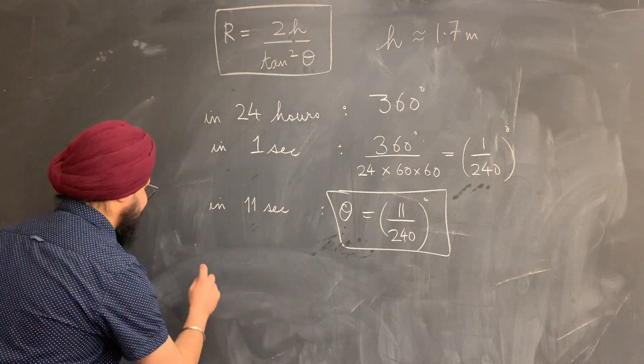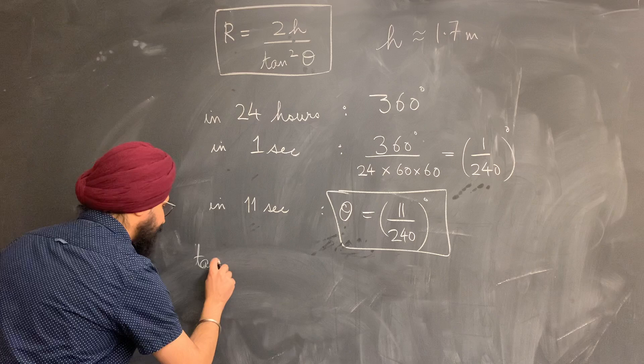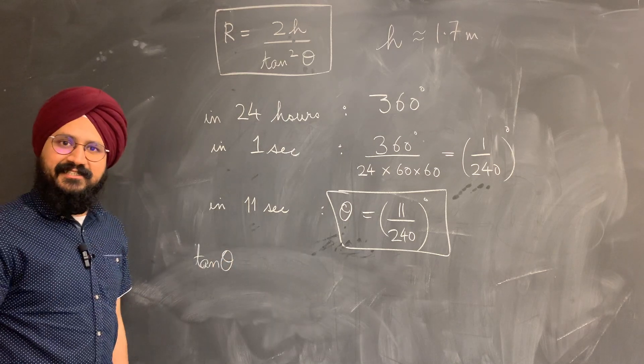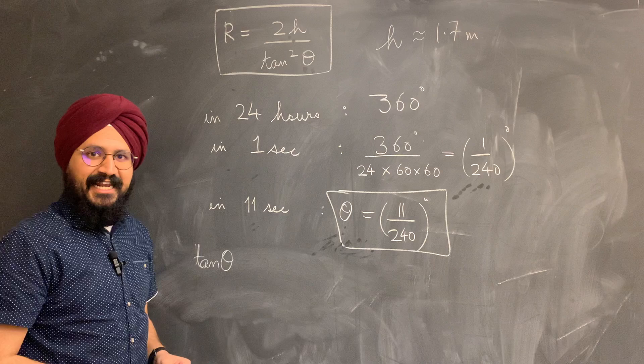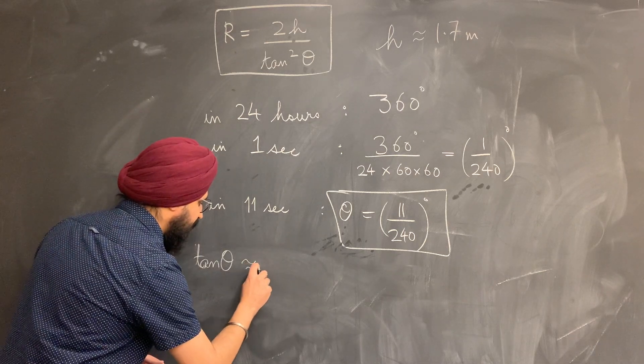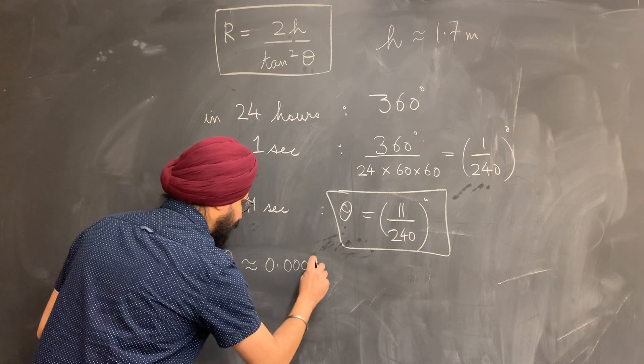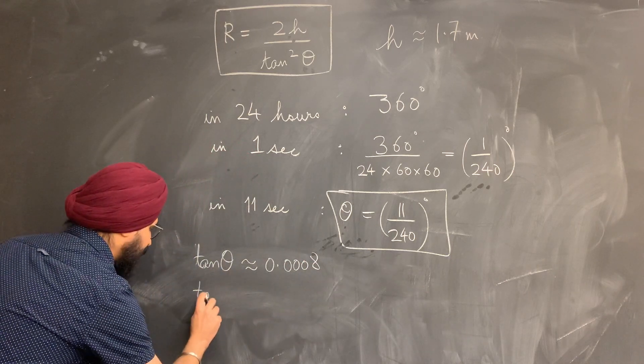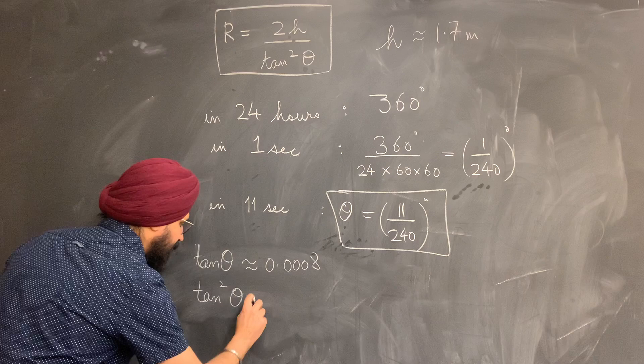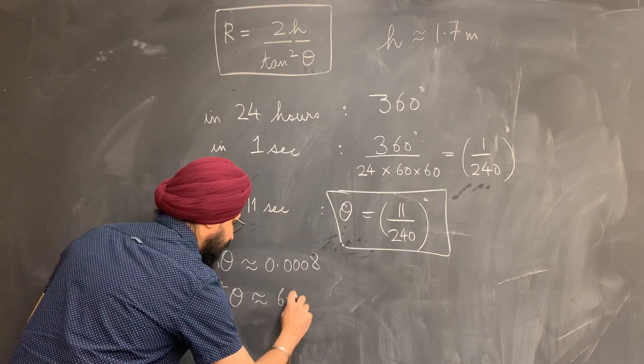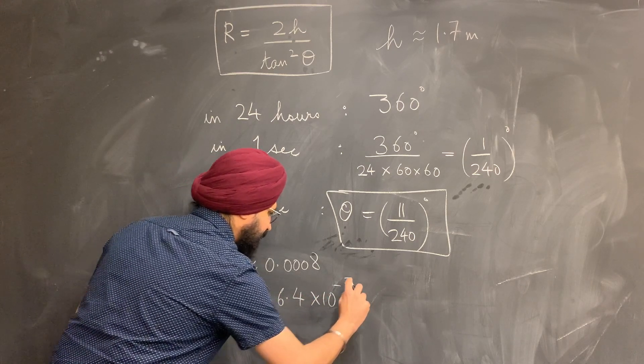And once we know theta, we can very easily find out the tan of that angle theta. I just took this number, plugged it into a calculator, and I got an answer. Comes out to be approximately 0.0008. And the square of the tan of this angle comes out to be approximately 6.4 times 10 to the negative 7.